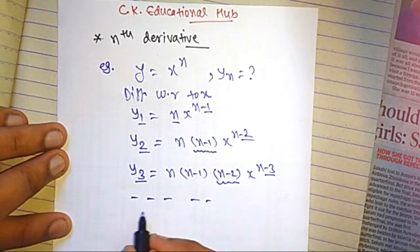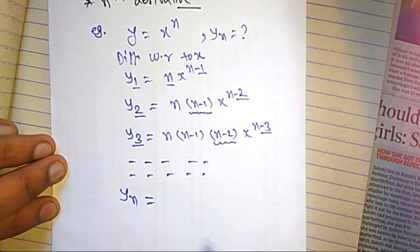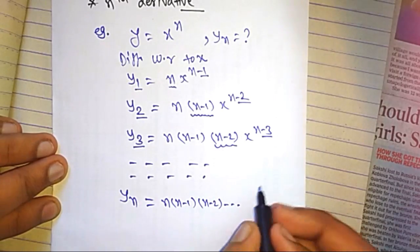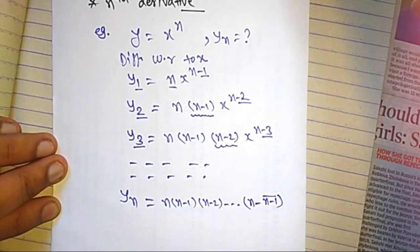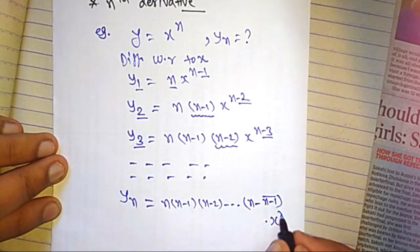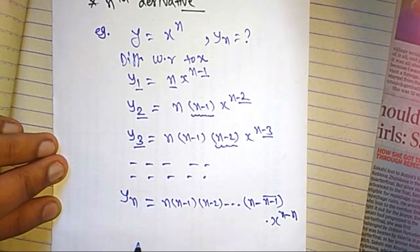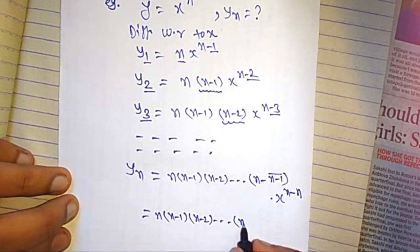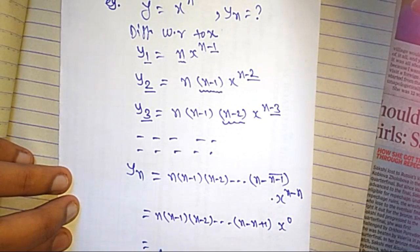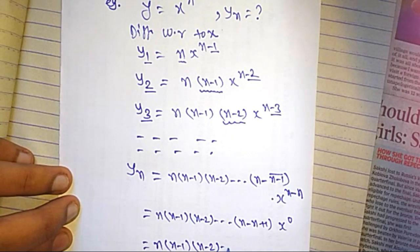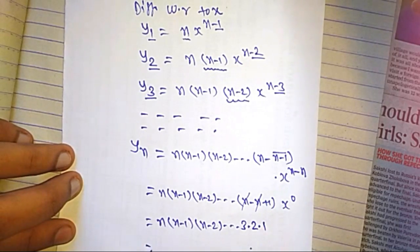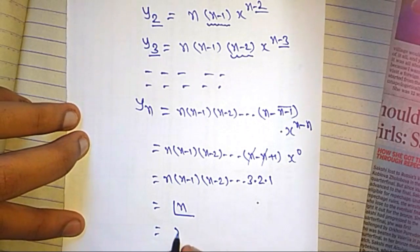Further differentiating up to yn, we can write: yn equals n(n−1)(n−2)···(n−n+1)·x to the power 0. This simplifies to n(n−1)(n−2)···2·1, since x to the power 0 is 1. This is nothing but factorial n, or n!.